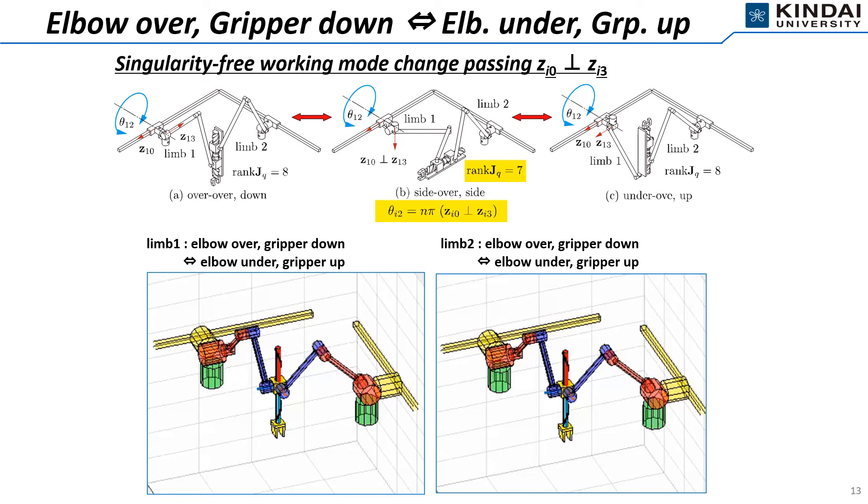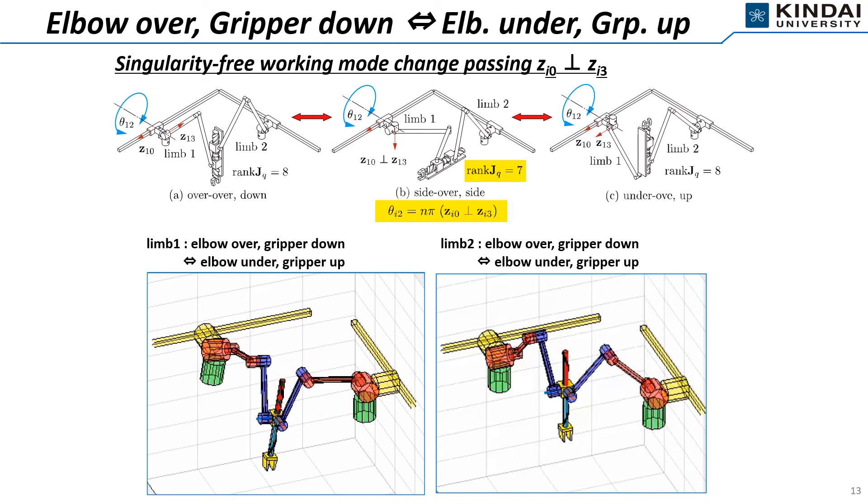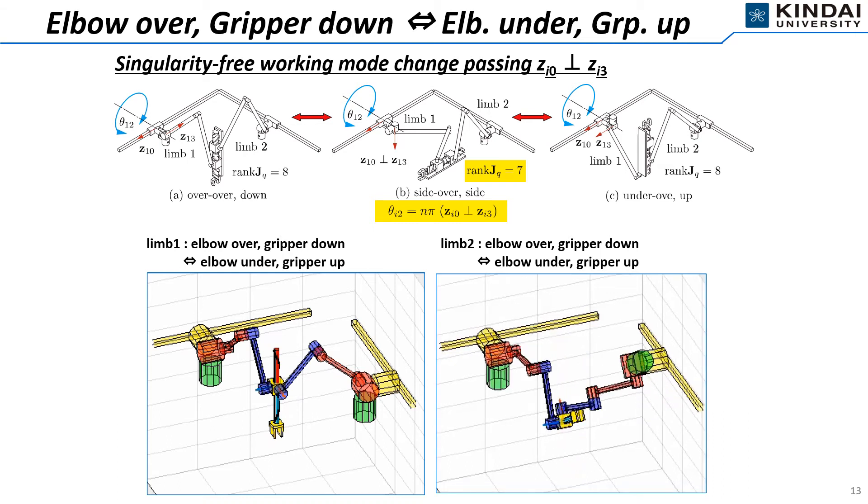This slide represents the singularity-free working mode change passing the yellow critical condition. As shown in the bottom-left animation, the elbow of the first limb switches between over and under. At that time, the gripper simultaneously switches between down and up by applying the mode change. You can see the same configuration switch for the second limb and the gripper as shown in the bottom-right animation.